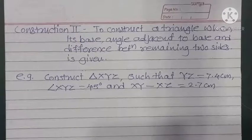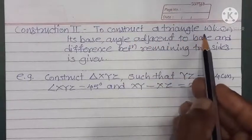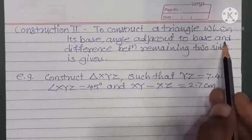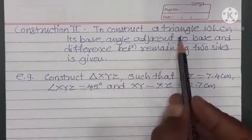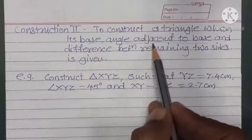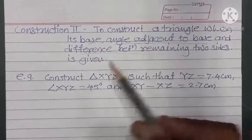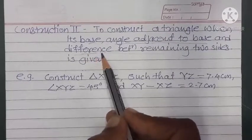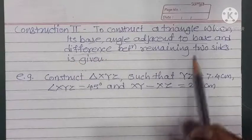Dear students, in this video we will see construction number two: to construct a triangle when its base, one of the base angles adjacent to the base, and the difference between the remaining two sides is given. This is different from the previous construction where the sum of remaining two sides was given; now it is the difference between remaining two sides.